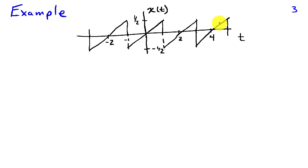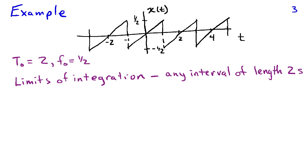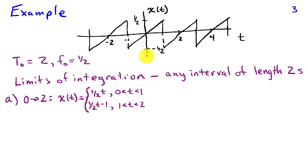We want to find the Fourier series coefficients corresponding to x(t). From the graph, we can see that the fundamental period is T0 equals 2 seconds — you can see that from zero crossing to zero crossing is 2 seconds. So when we set up our integral, we're going to choose the limits of integration to be any interval of length 2 seconds. Different choices for that interval make the integral easier or more difficult.